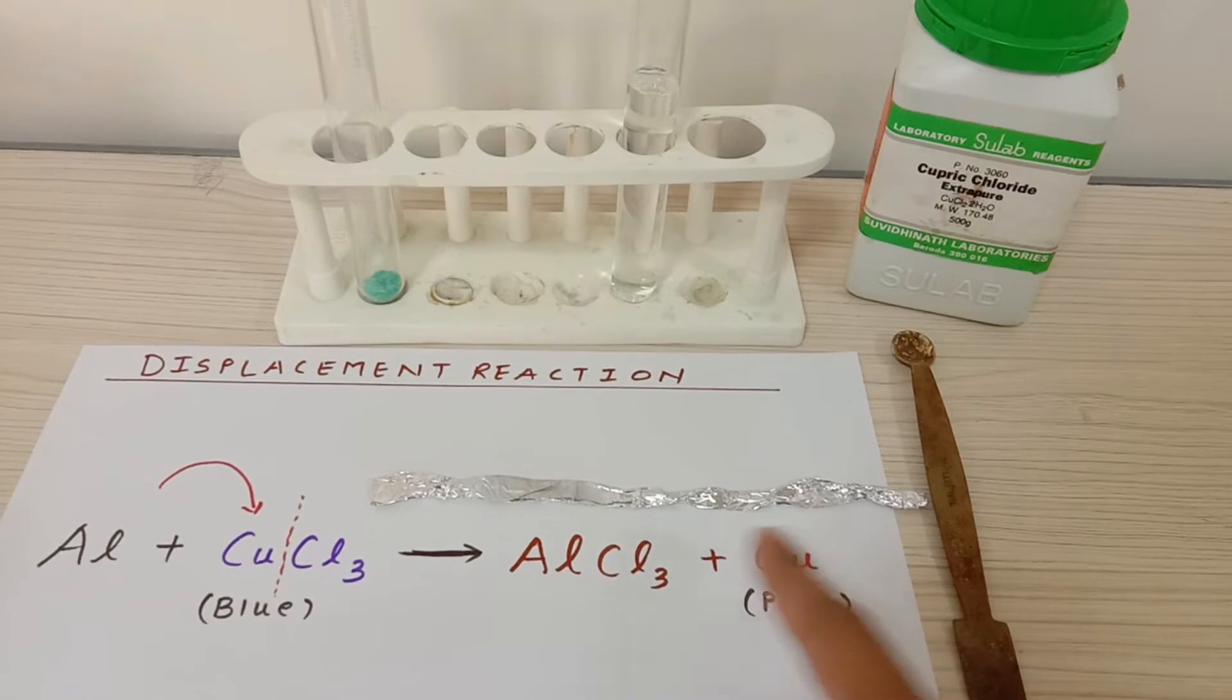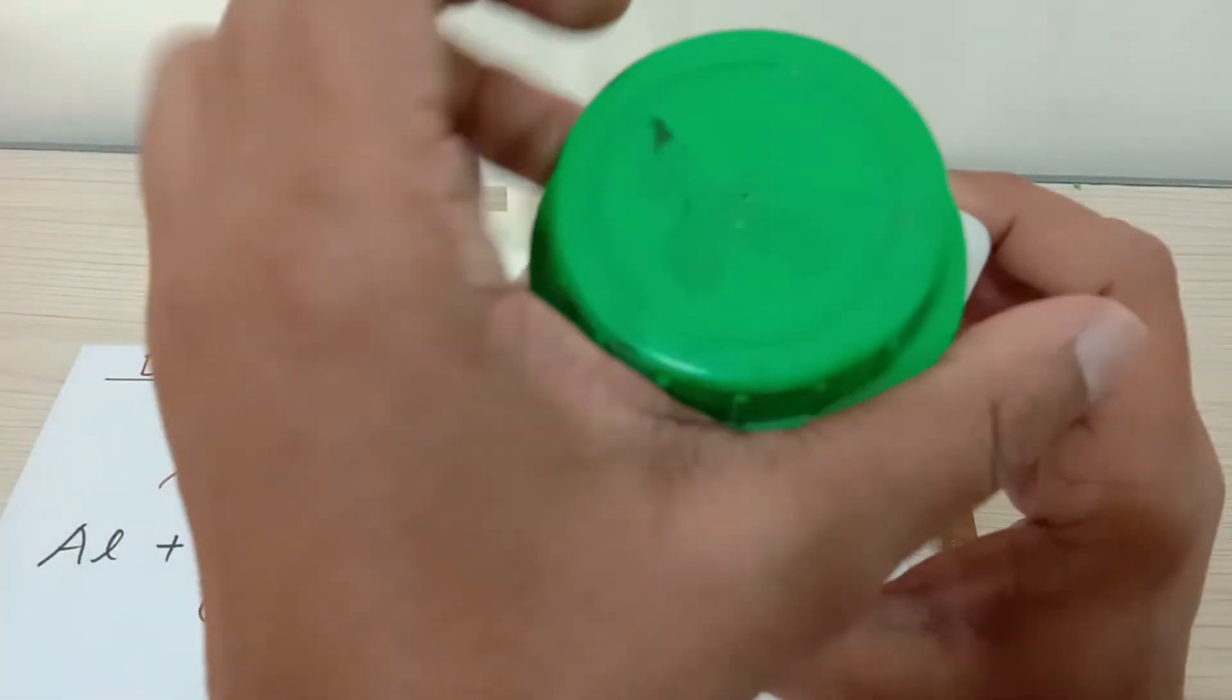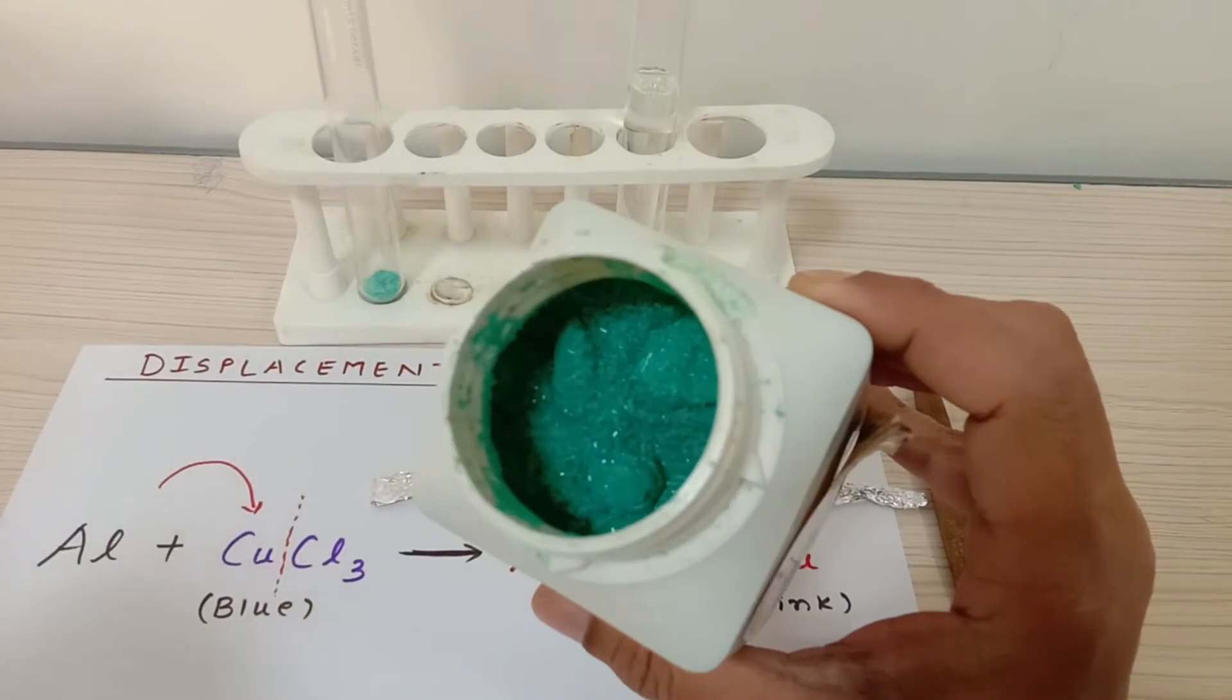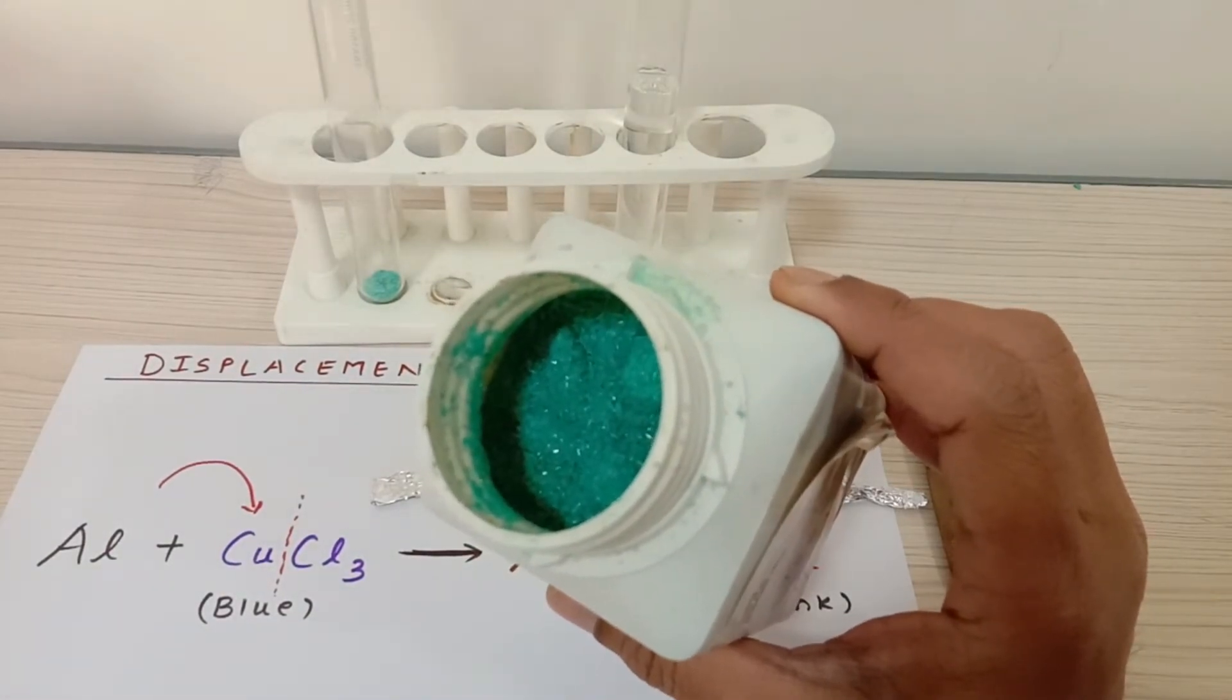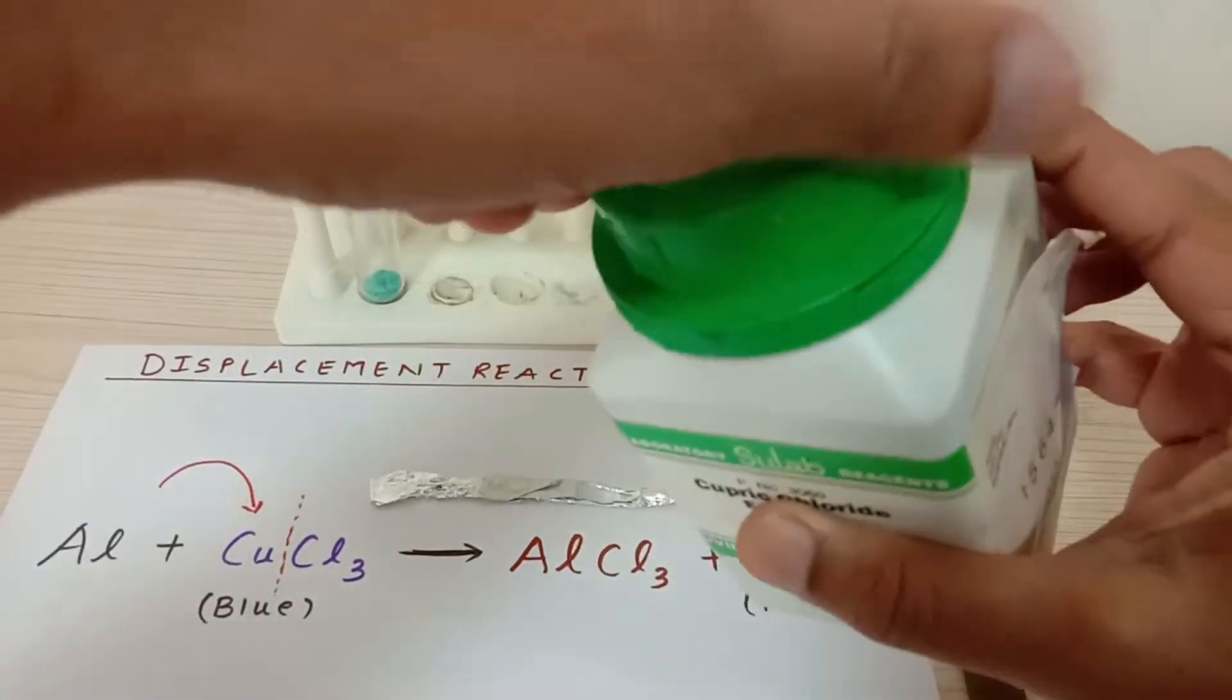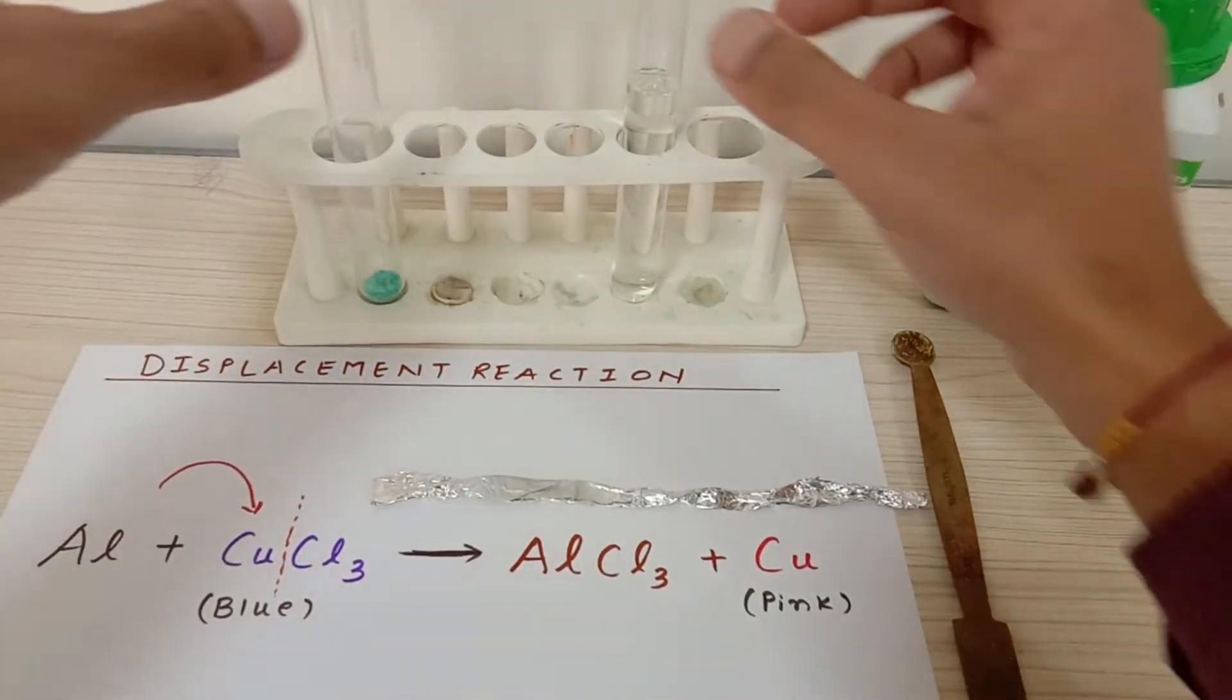Let me show you - this chemical is almost greenish in color but also tends to look blue, so it is bluish greenish in color. I have already taken some amount of this salt into one of the test tubes.